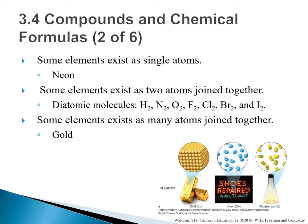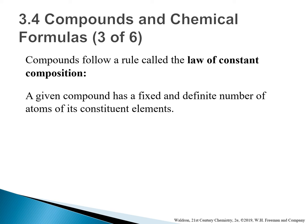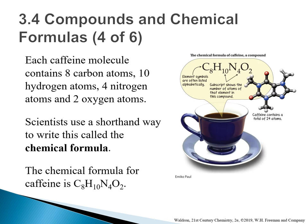Some other elements exist as many atoms joined together, such as gold. Compounds follow a rule called the law of constant composition: a given compound has a fixed and defined number of atoms of its constituent elements. For example, water is H2O. Regardless of whether the water is in China or in Boston, it always has the same formula H2O — every two hydrogens combined with one oxygen. Each caffeine molecule contains eight carbon atoms, ten hydrogen atoms, four nitrogen atoms, and two oxygen atoms.